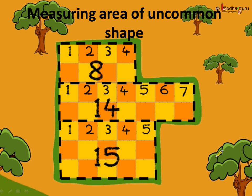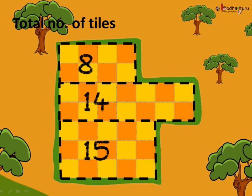So now we can find the total number of tiles by adding the tiles used in the smaller areas. Two rows of four tiles gives 4×2=8 tiles. Seven tiles in two rows gives 7×2=14 tiles. Three rows of five tiles gives 5×3=15 tiles. Adding them: 8+14+15=37. So the area of this irregular shape is 37 square units.